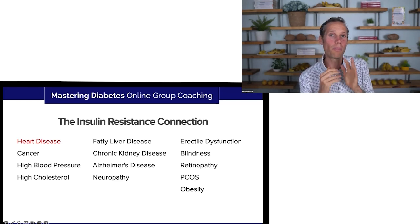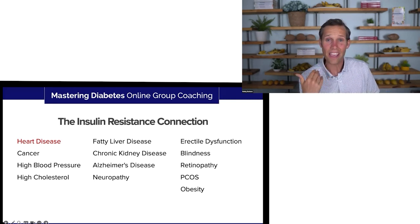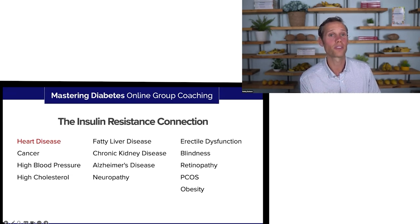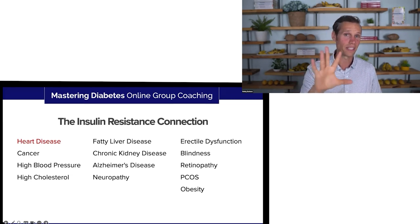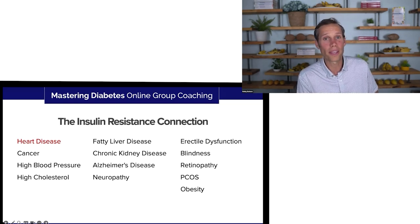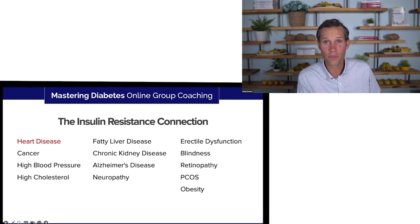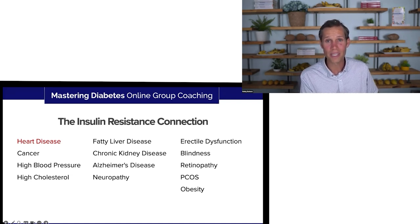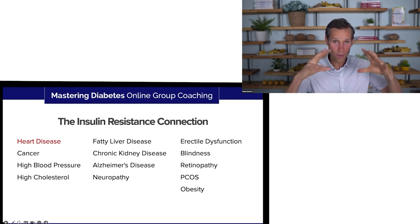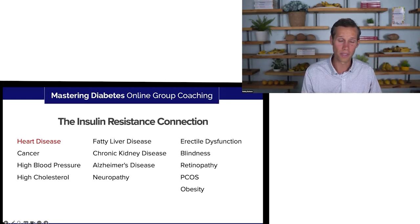The number one cause of death for people living with all forms of diabetes is heart disease. If you're insulin resistant, you have an increased risk of developing everything on the screen: cancer, high blood pressure, high cholesterol, fatty liver disease — that's non-alcoholic fatty liver disease — chronic kidney disease, Alzheimer's disease, neuropathy, erectile dysfunction, blindness, retinopathy, PCOS, and obesity. If you can become insulin sensitive, you are addressing all of these things simultaneously and really putting yourself in prevention mode.